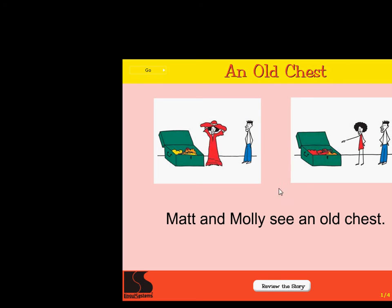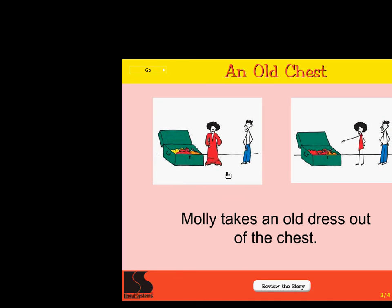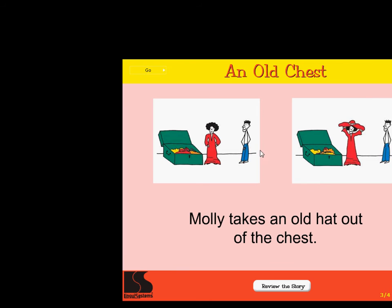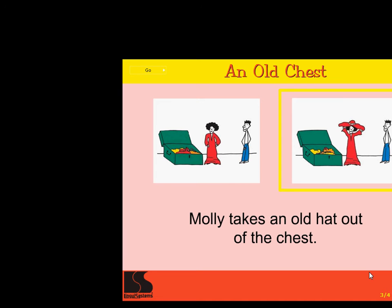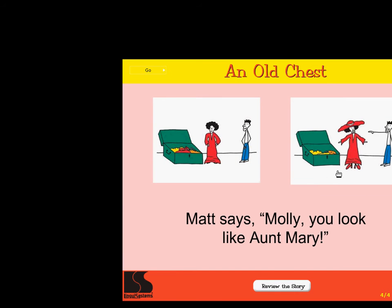Click on the picture that matches these words: Matt and Molly see an old chest. Excellent! Click on the picture that matches these words: Molly takes an old hat out of the chest. Correct! Click on the picture that matches these words. Super! Click on the picture that matches these words: Matt says, Molly, you look like Aunt Mary. Right on.